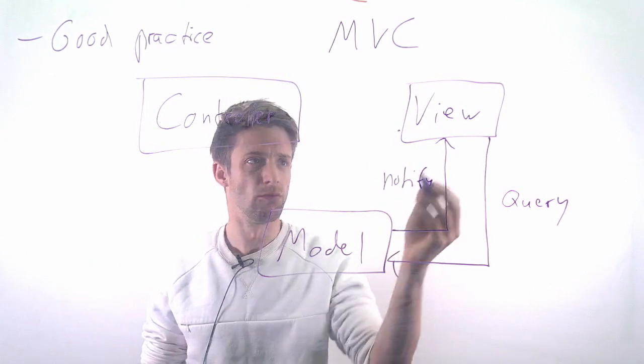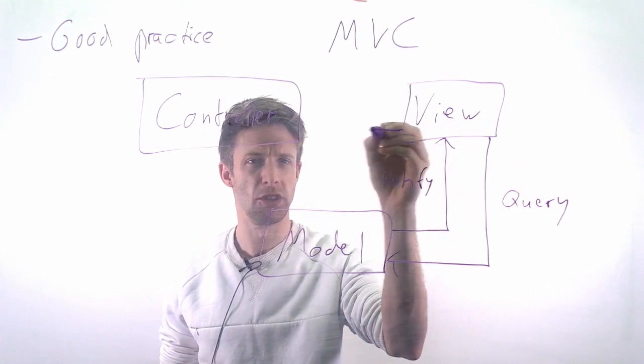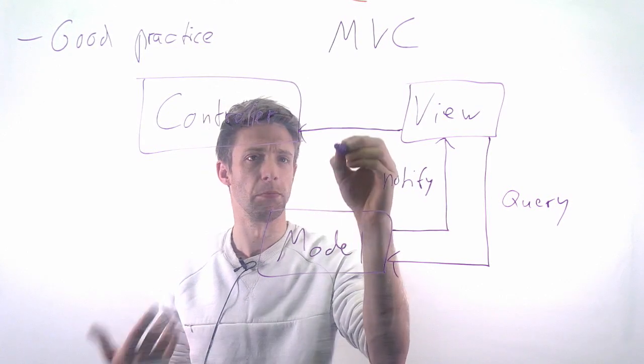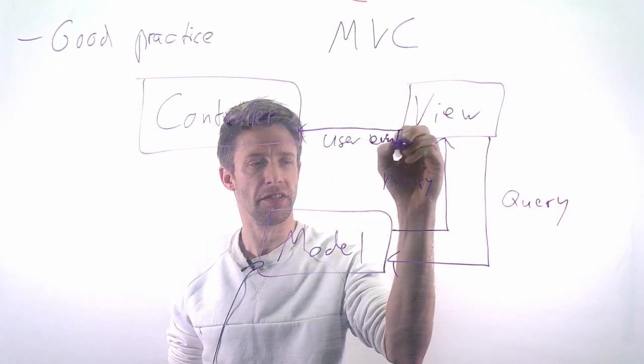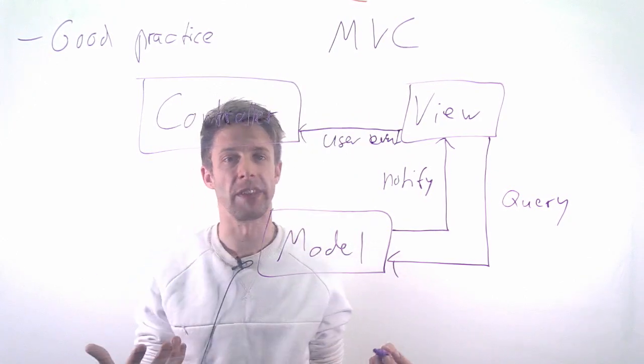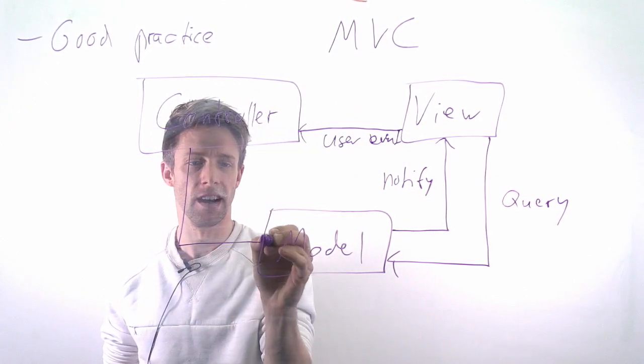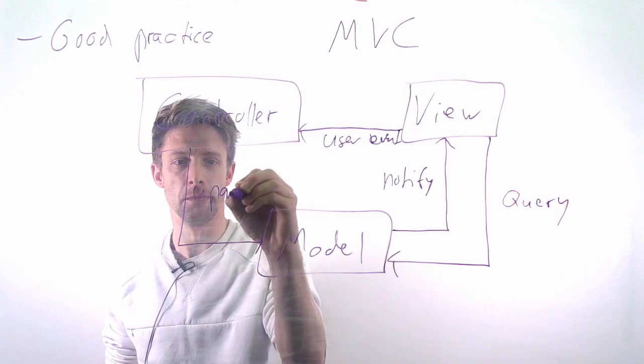The view is often event-based. So there might be a user event, like a user buying something. The view then informs the controller something has happened, and depending on what happened, the controller updates the model.